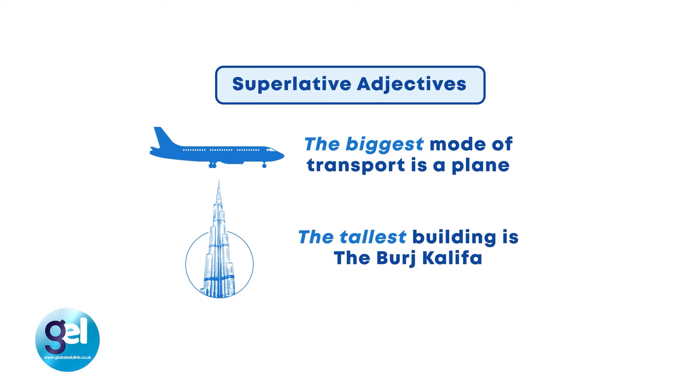Remember with superlative adjectives, we use them to describe an object at the extreme or highest degree. It's important to note that we use the in front of superlative adjectives. As always in English, watch out for irregularities — irregular forms which do not follow the standard grammar rules.